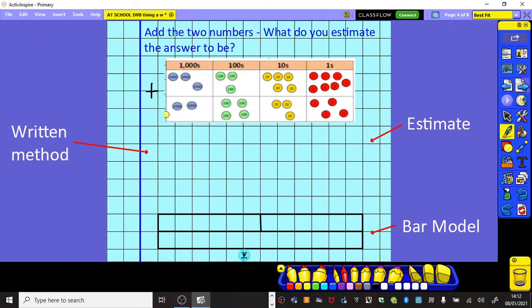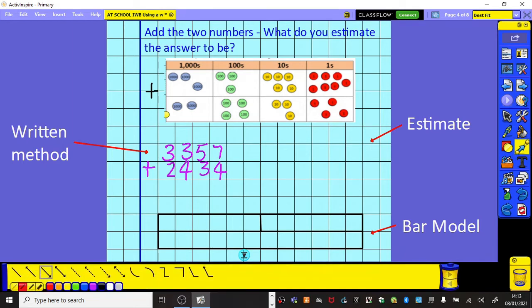Now, if we have a look at my place value grid, I've effectively got two numbers. The first number is showing me 3,000, I've got 300, I've got 5 tens, and I've got 7 ones. And I'm adding that, looking now at the bottom number, to 2,000, I've got 4 hundreds, I've got 3 tens, and I've got 4 ones. And sorry, that is still on the arrow function. Let's just change that. And obviously, really good idea to underline with a ruler rather than actually using an arrow.